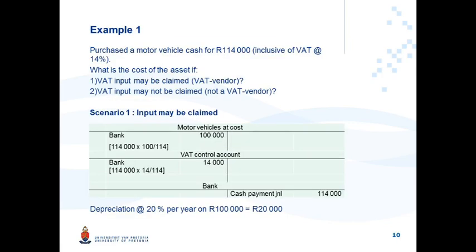Example one: a motor vehicle was purchased for cash for R114,000, which includes VAT at 14%. What would the cost of the asset be under two scenarios — scenario one where you are a VAT vendor and can claim input tax, and scenario two where you are not a VAT vendor? Under scenario one, the motor vehicle is recorded at cost of R100,000 (R114,000 × 100/114), with the bank credited at R114,000 and a VAT control account debited at R14,000.